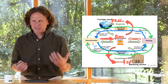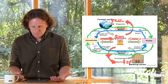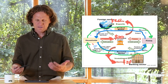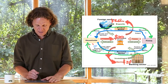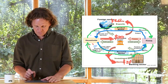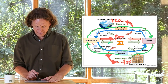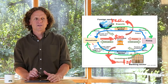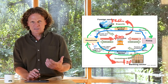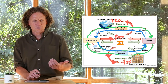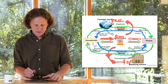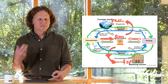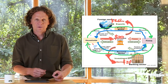So now we have a bunch of leakages from the system. But here's the catch — you might have noticed there are some green arrows here, and those green arrows are actually something called injections into the system.